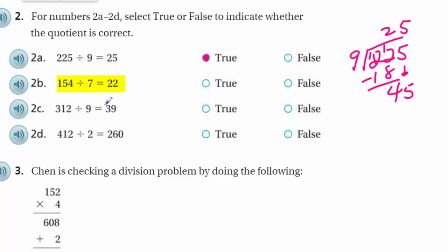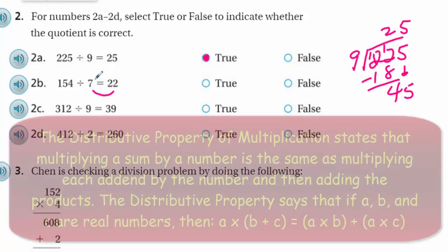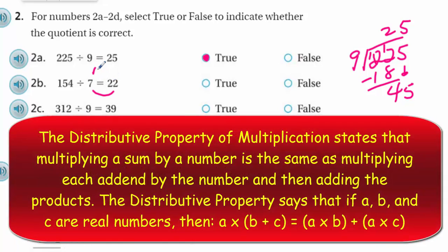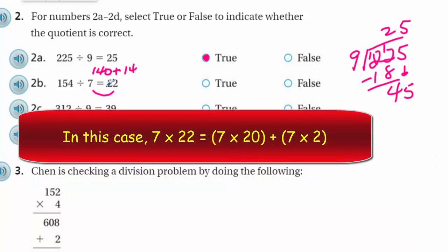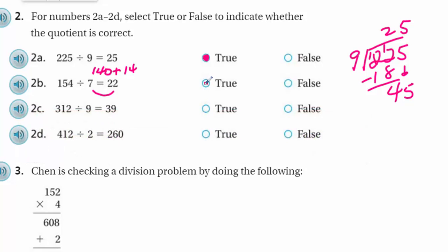Number 2 is for numbers 2A through 2D, select true or false to indicate whether the quotient is correct. So 225 divided by 9, we just need to divide this out. 9 will go into 22 about two times, that's 18. I need to subtract, that leaves me with 4 left over. I bring down my 5, I have 45. Nine goes in five times. So my friends, I would say true.